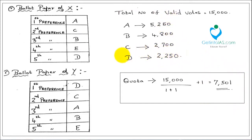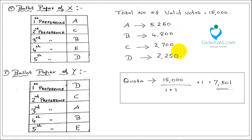The candidate with the least votes is D, with 2,250 votes, so D is eliminated from the race. The 2,250 members who made D their first preference now have their second preference votes transferred. For example, voter Y had D as first preference and C as second, so C gains those votes. The 2,250 votes are distributed among A, B, and C depending on those voters' next preferences — this is called the single transferable vote. After redistribution, counts are recalculated. If still nobody reaches 7,501, further rounds of elimination continue until one candidate secures the quota and is elected president.